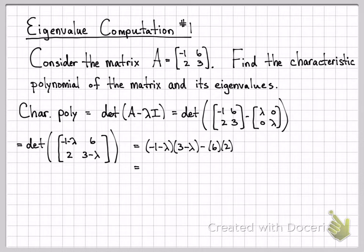If we multiply this out, negative one times three is negative three. Negative one times negative lambda is plus lambda. Negative lambda times three is negative three lambda. And then negative lambda times negative lambda is lambda squared. And then minus 12 for this term. If we simplify and combine like terms, I get lambda squared minus two lambda minus 15. So this is the characteristic polynomial of the matrix. By definition, it's always equal to the determinant of A minus lambda I.